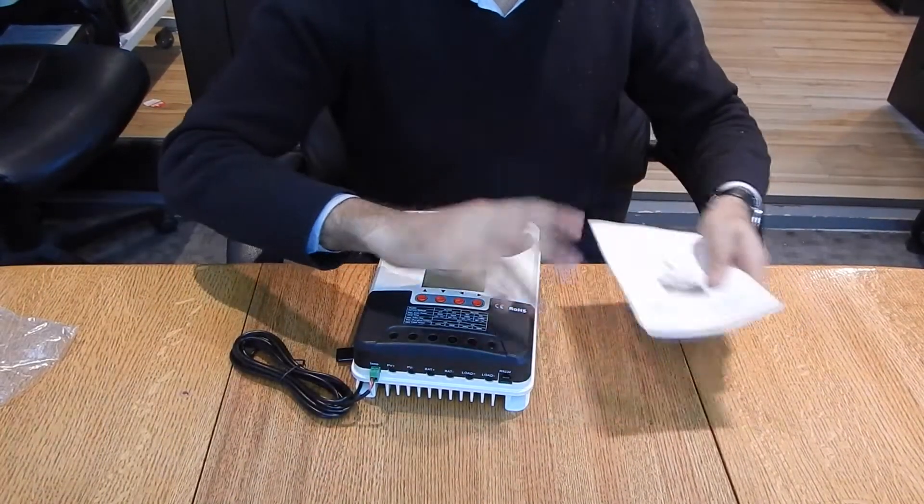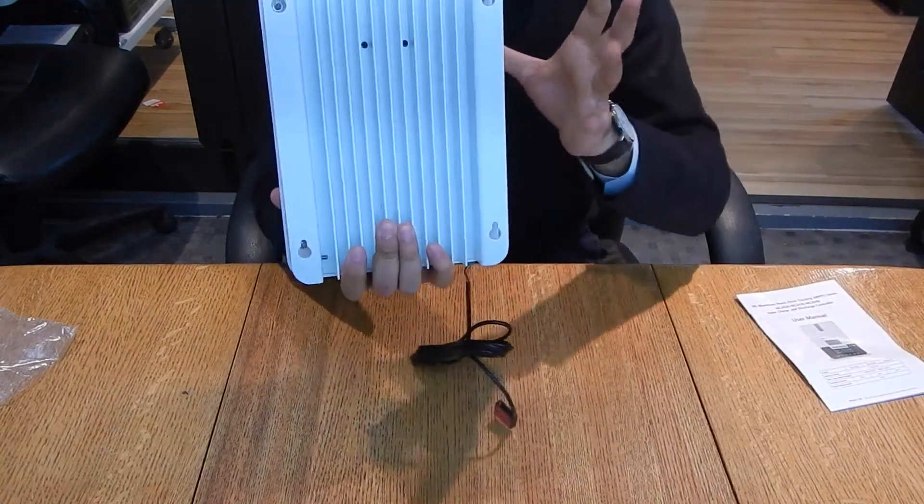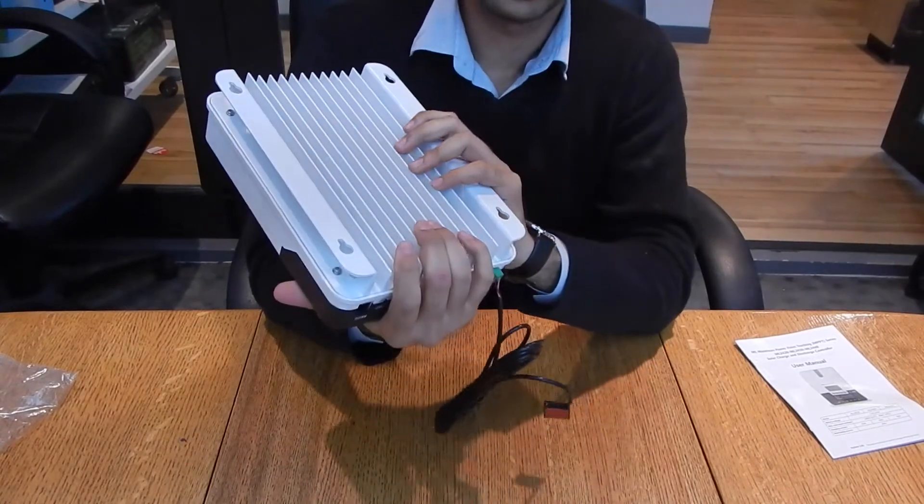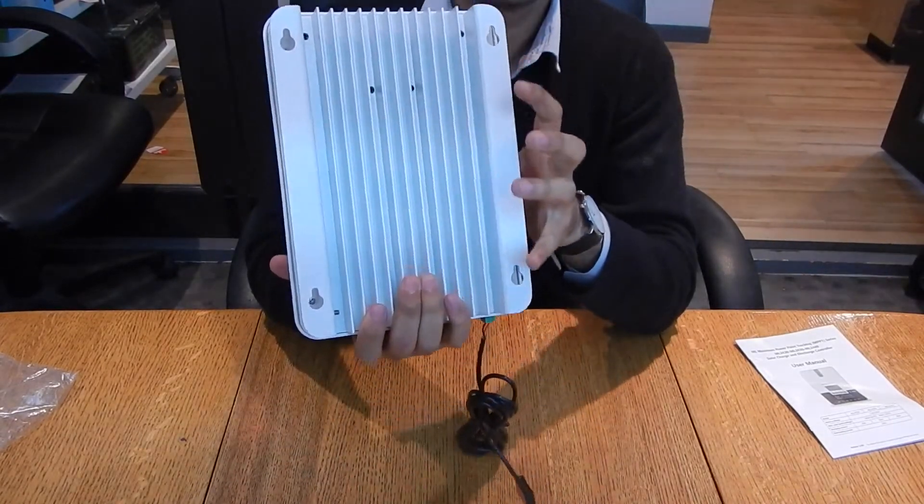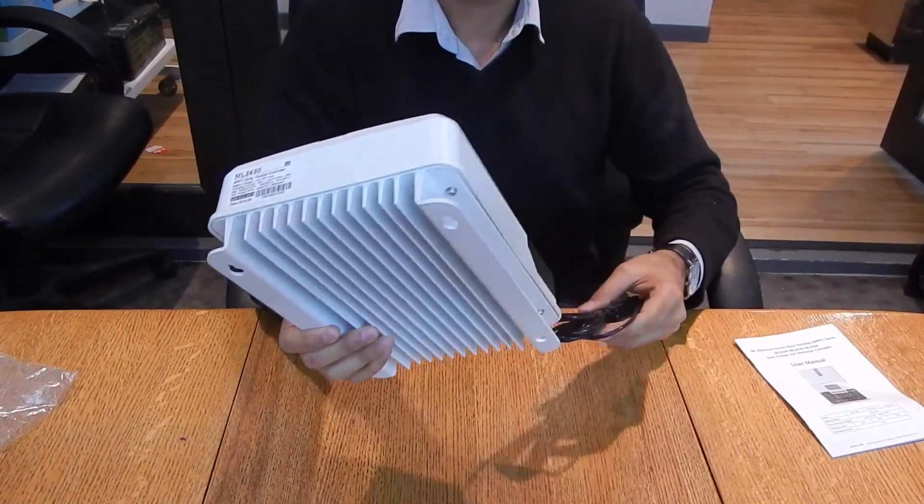There's also a heat sink at the back. Since it mounts to the wall, the heat sink dissipates the extra heat from the load. Apart from that, that's pretty much it.